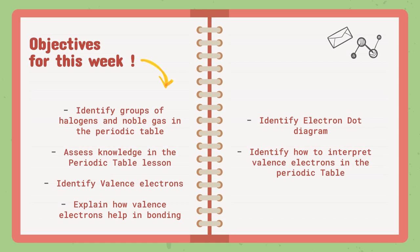And then we are going to explain how valence electrons help in bonding. In this lesson, elements are combining. They are becoming compounds. They are bonding. How do valence electrons affect that? What do they do to help? How do they help the elements to bond?